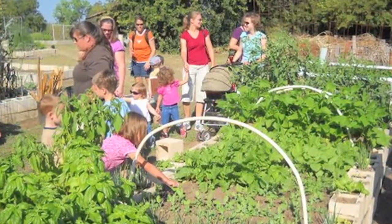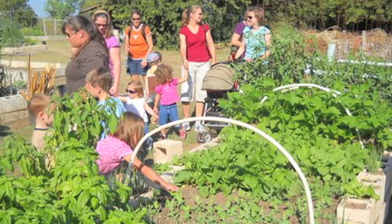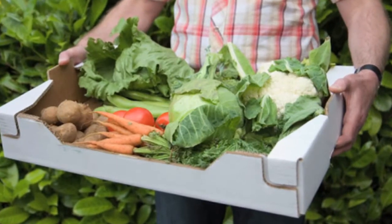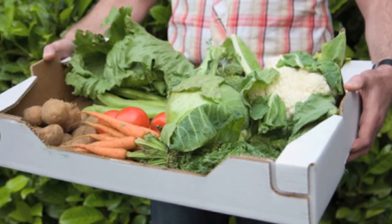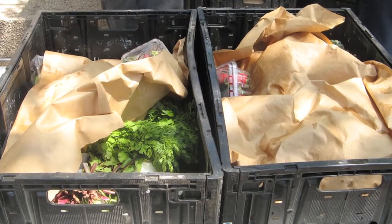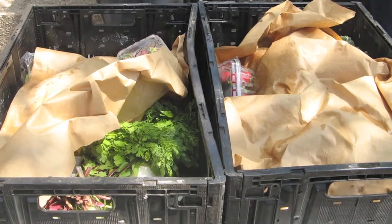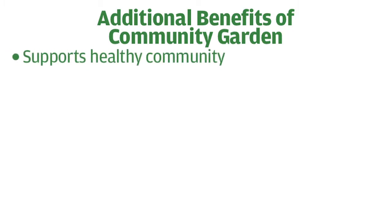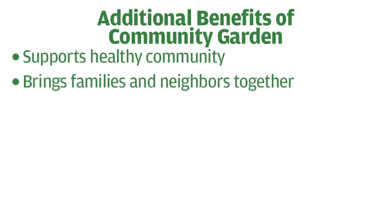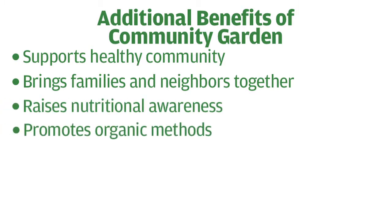Now more than 100 gardeners tend those plots, which produce just about everything that can grow in Central Texas. In return for the use of the garden, growers must contribute 10% of their harvest, by weight, to the community food pantry, which accounts for 300 to 500 pounds of the pantry's food annually. Beyond providing access to nutritious, affordable food, the garden supports a healthy community by bringing families and neighbors together, raising nutritional awareness, and promoting organic growing methods.